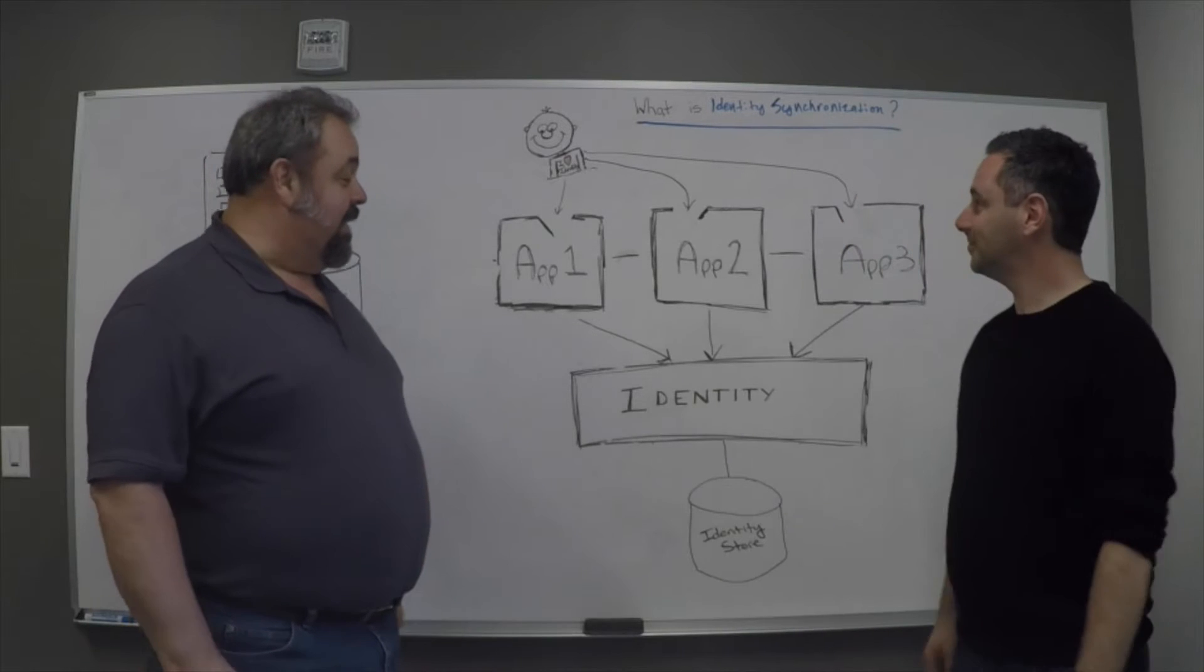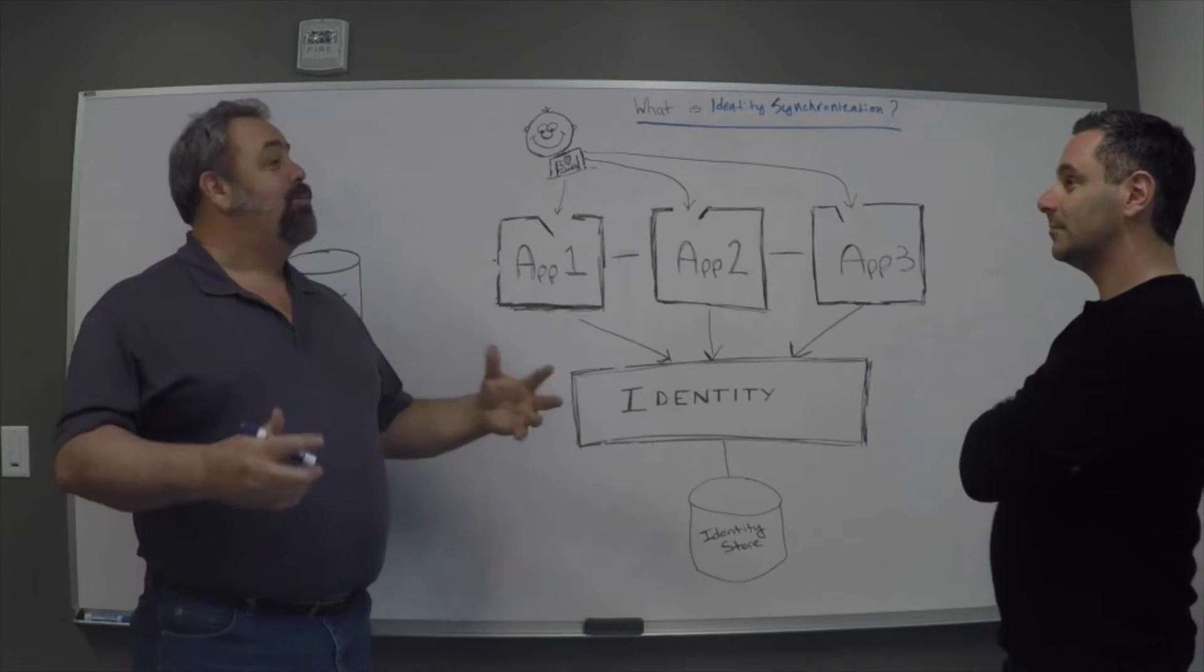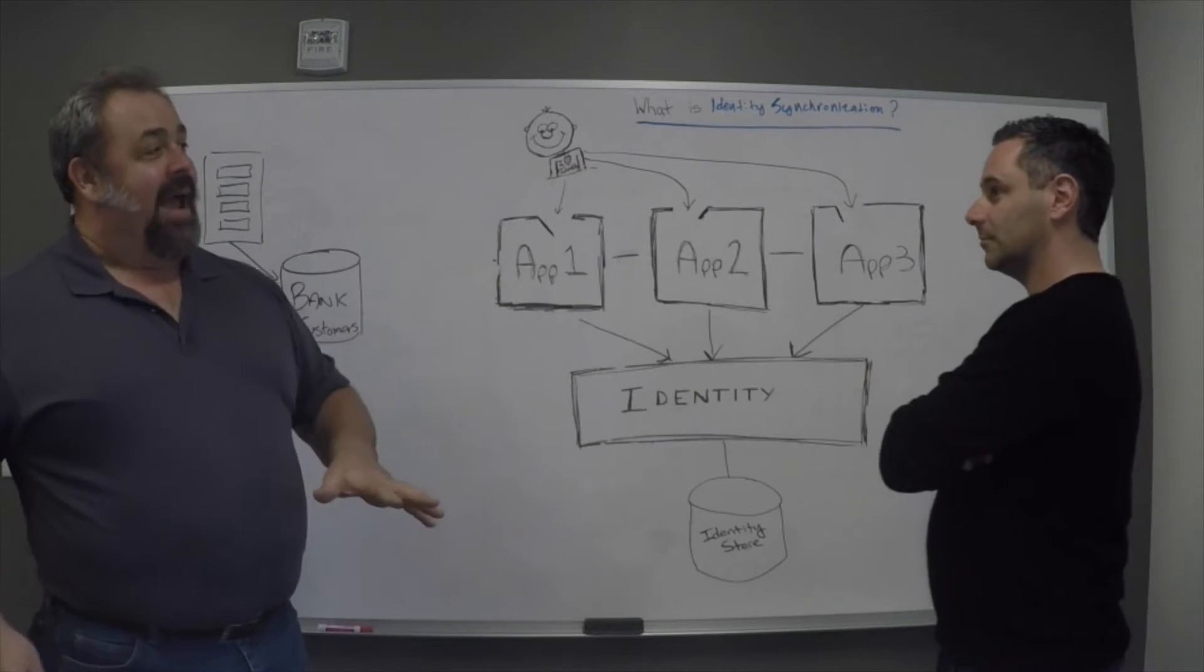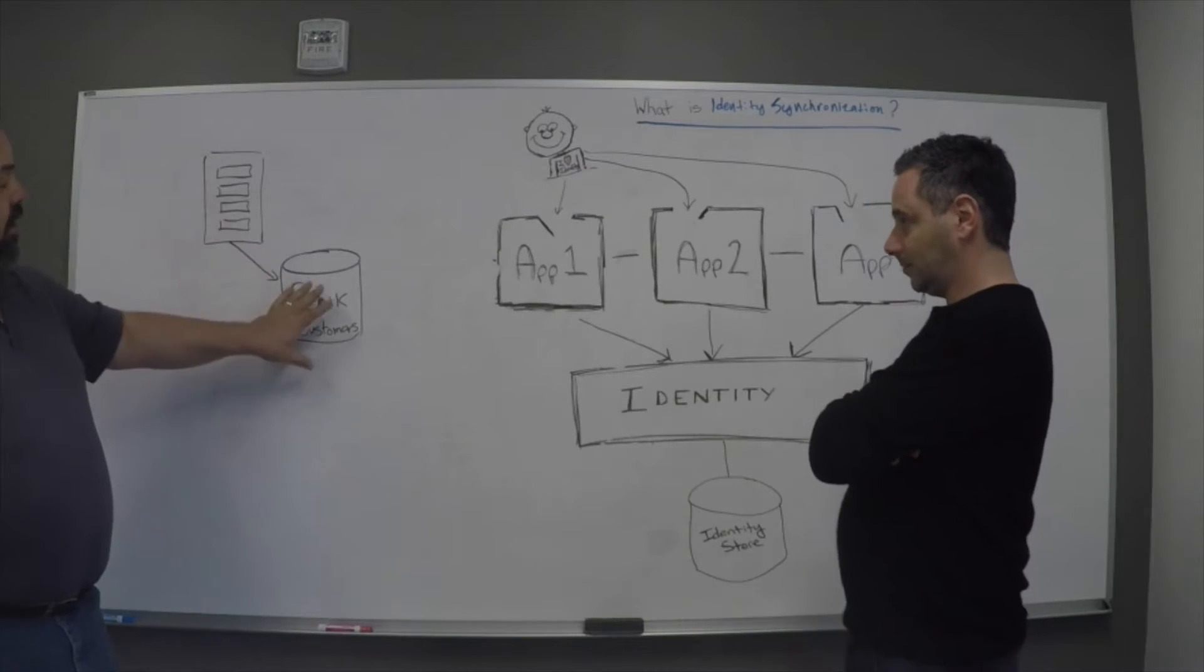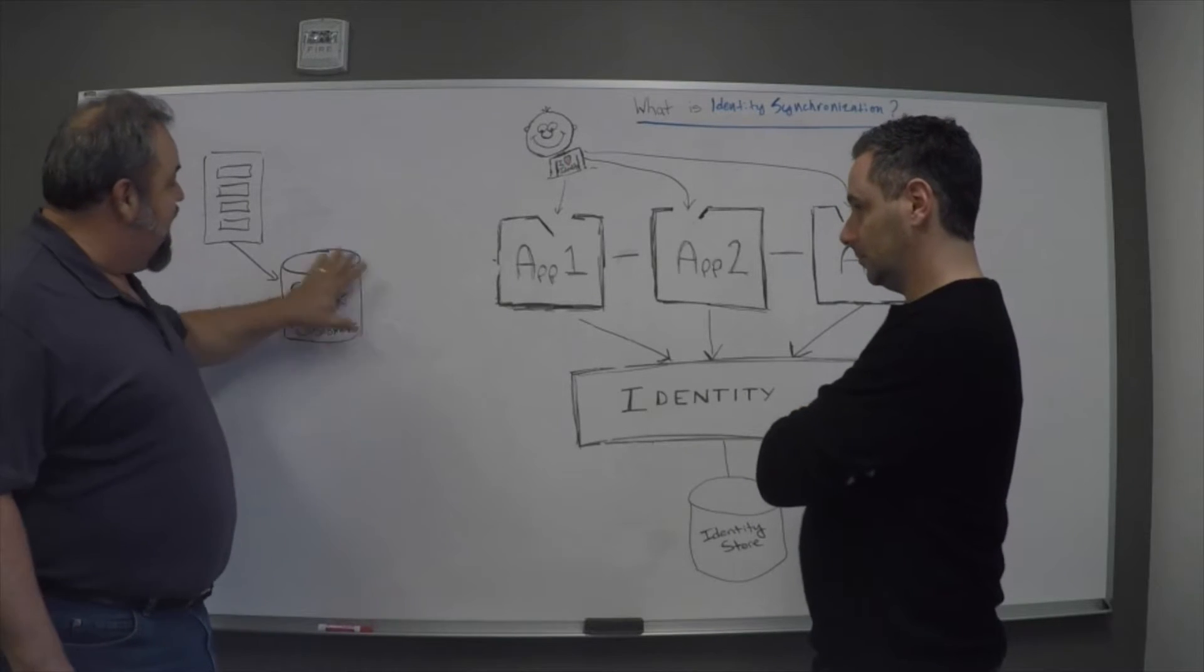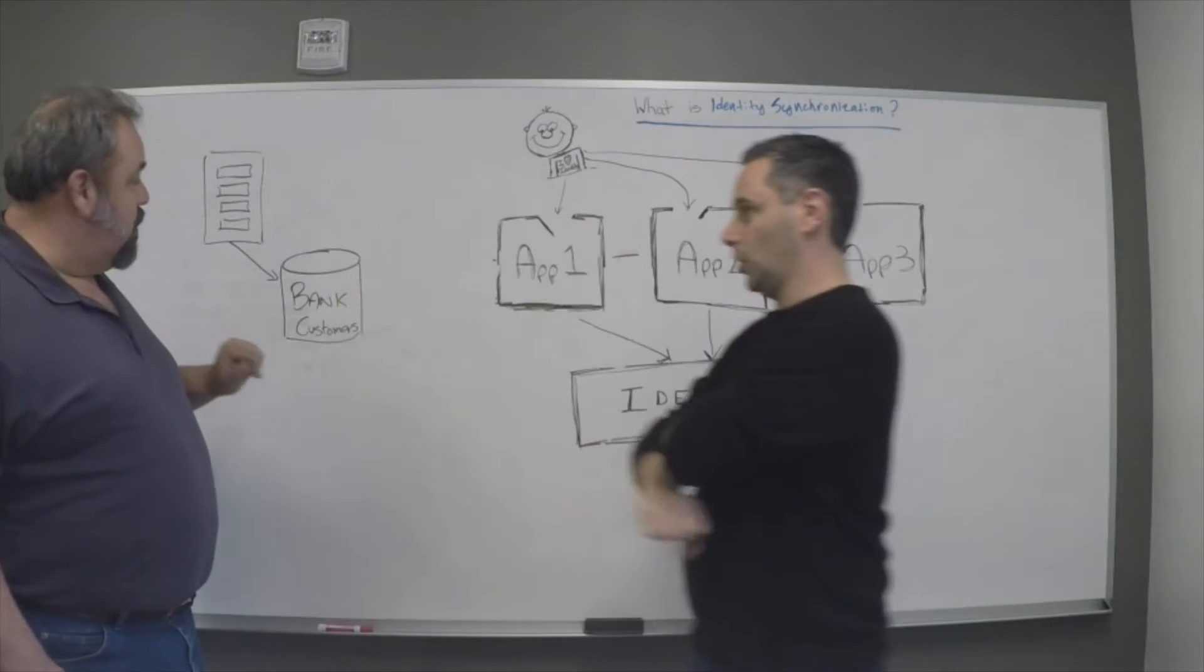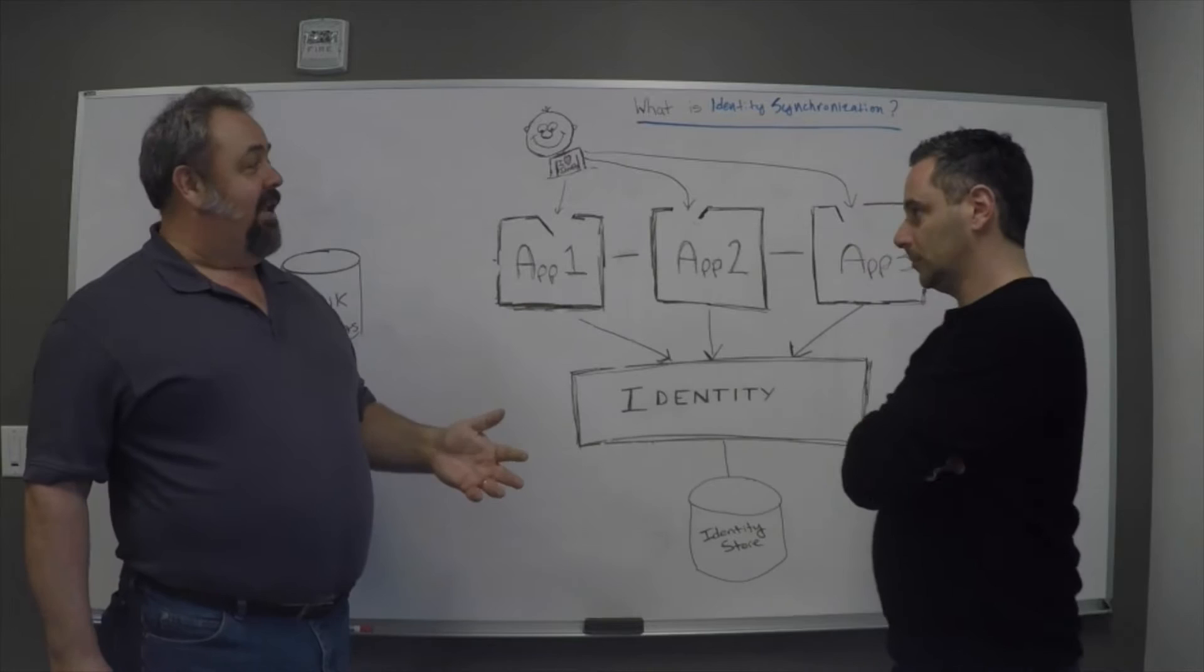Identity synchronization is about the fact that in the real world there are going to be multiple places where identity information needs to be copied. So we're going back to our bank. We've just created our bank. The user has created an account and we've got a directory here of all the bank customers that have been created. All of our bank customers are here in this data store. However, the bank has a bunch of applications.